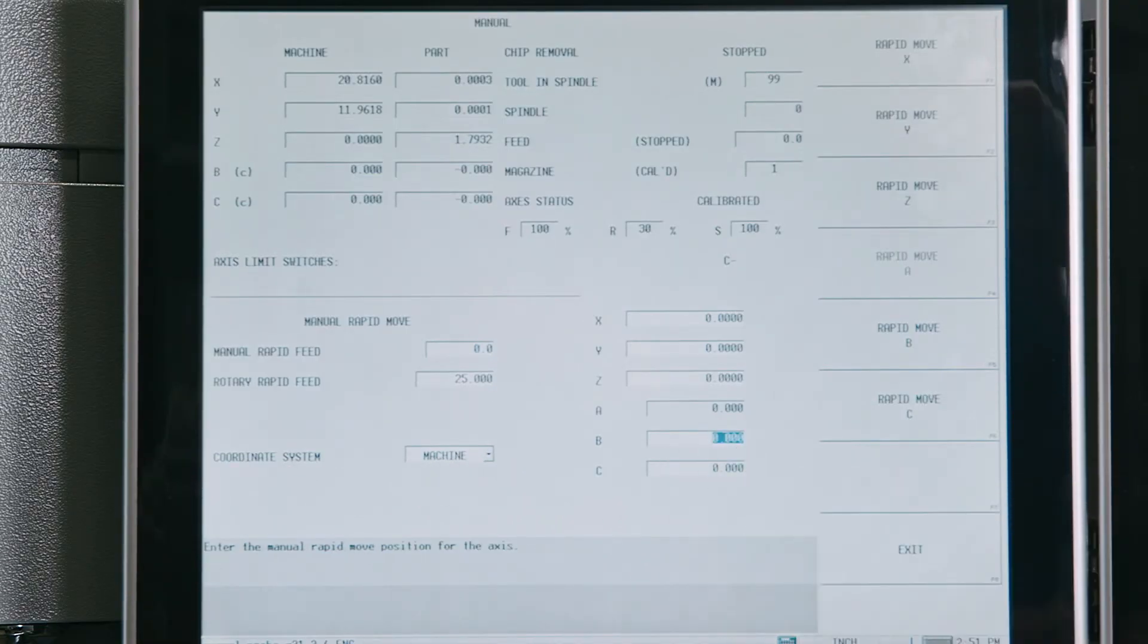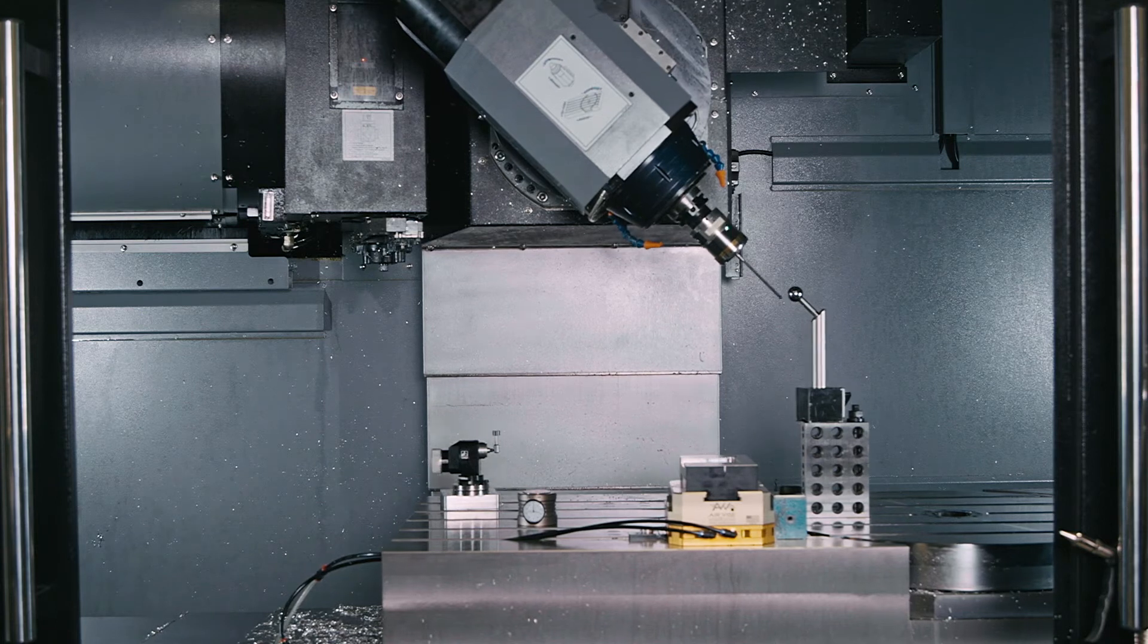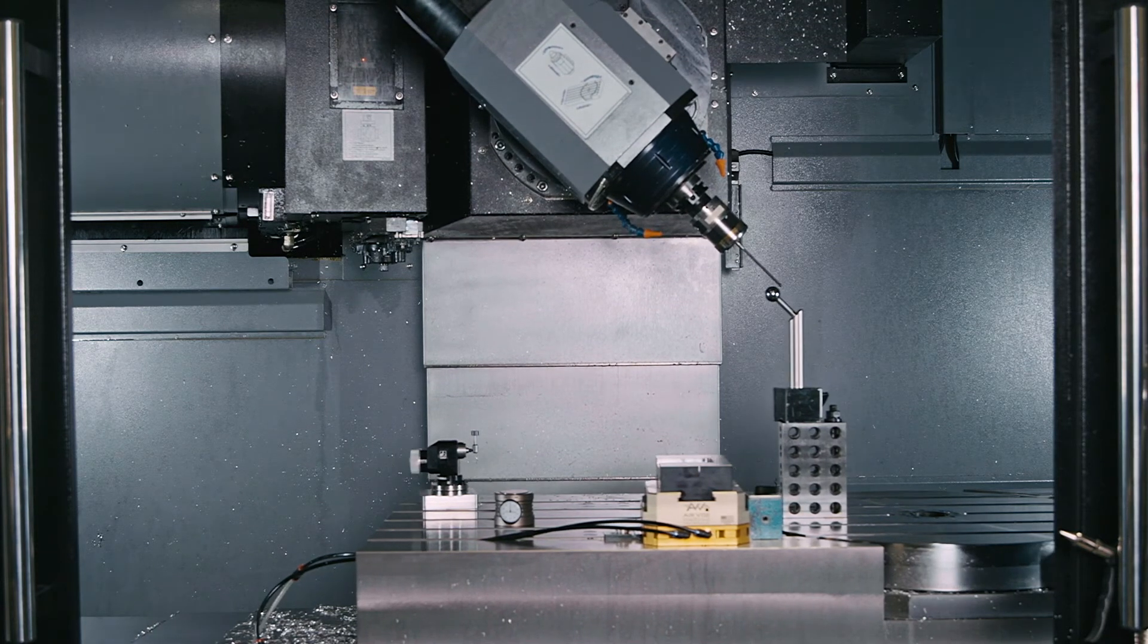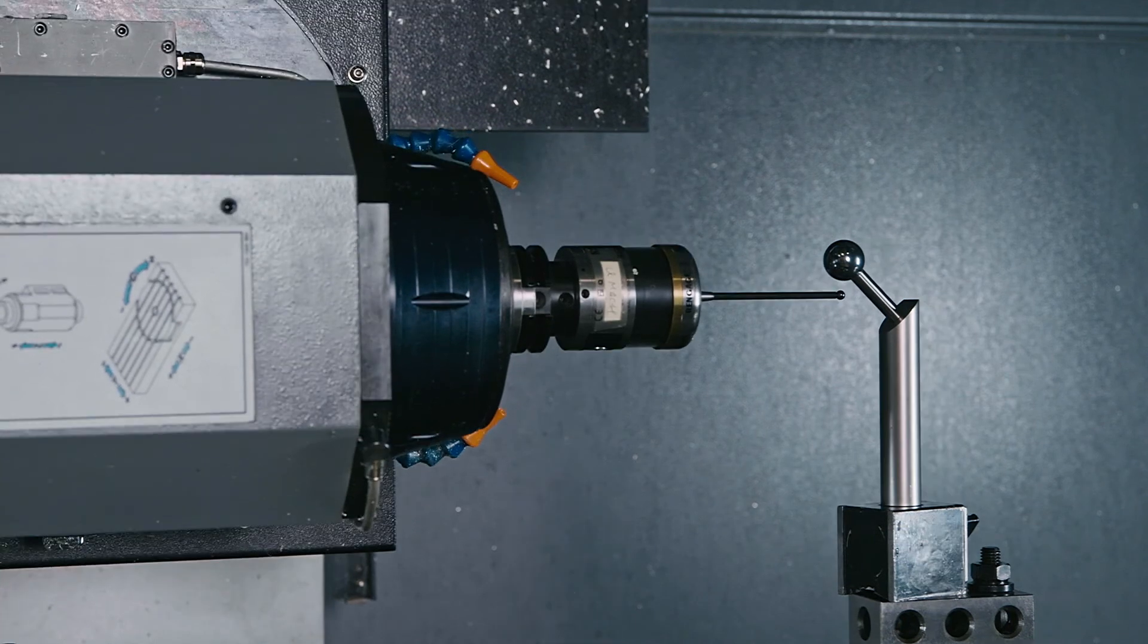Now we command the B axis to 45 degrees. Jog within a quarter inch and run the program again. And then we do the same for 90 degrees.